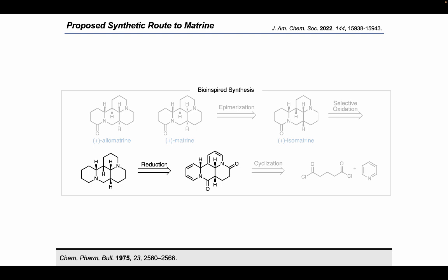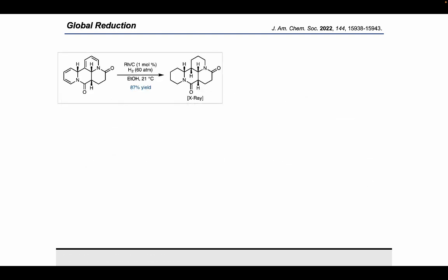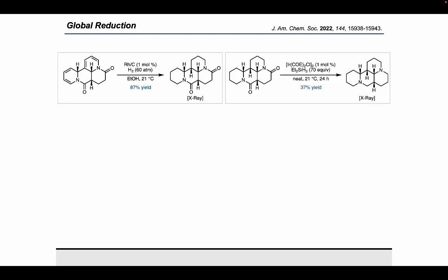With a tetracyclic scaffold of these natural products in hand, we then turned our attention towards developing reduction conditions to access the unfunctionalized diamine. We initially found that we could perform the hydrogenation of the tetracycle using 1 mol% rhodium on carbon to give us access to the bisamide in an 87% yield. Our first success at reduction of the bisamide to the diamine occurred with a rhodium catalysis, which gave a 37% yield.